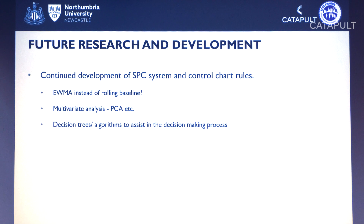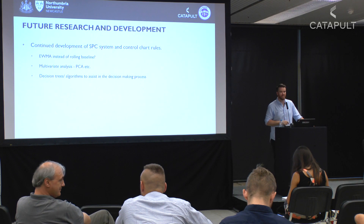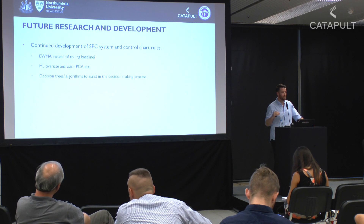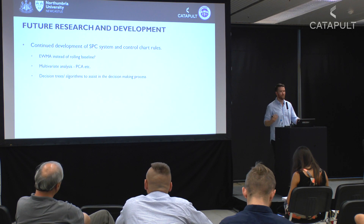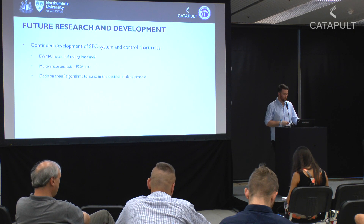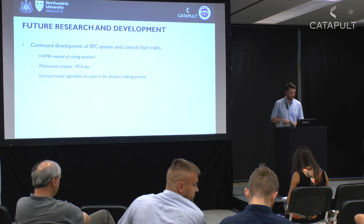Future developments: we'll continue adapting those control chart rules, possibly using an exponentially weighted baseline instead of a rolling one. Currently, a training load dropping off the end of the six-week window has the same influence as the most recent days, so exponentially weighting the last few days or weeks might give a better indication of what's actually occurring. A multivariate analysis would also be interesting — time above MAS provides a strong theoretical framework, but it doesn't tell us everything, so we could include other measures. I'd also like to create decision trees or algorithms so that when certain rules flag up, we have a systematic process to adapt training and communicate with coaches.